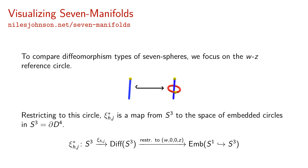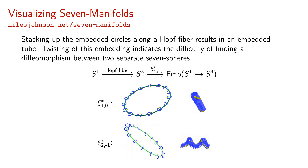To compare diffeomorphism types of seven-spheres, we focus on the WZ reference circle. Restricting to this circle, C-H-J star is a map from S3 to the space of embedded circles in S3. Stacking up the embedded circles along a Hopf fiber results in an embedded tube. Twisting of this embedding indicates the difficulty of finding a diffeomorphism between two separate seven-spheres.